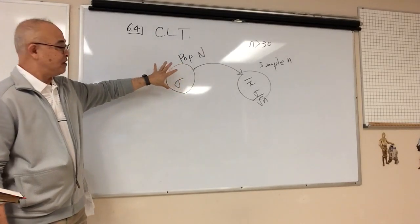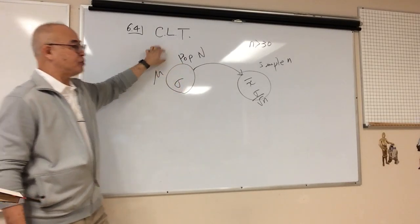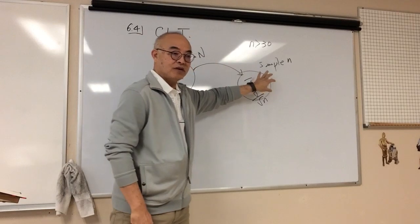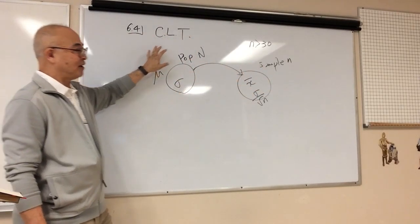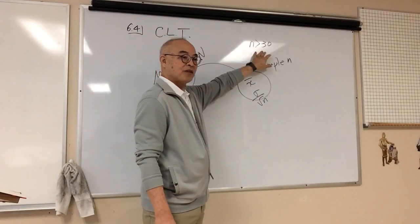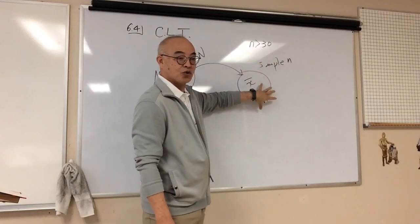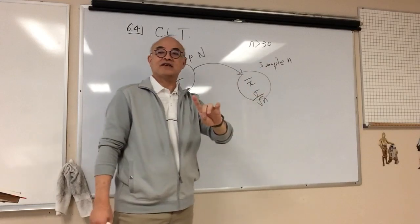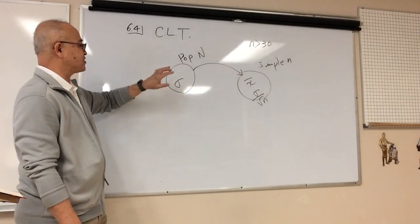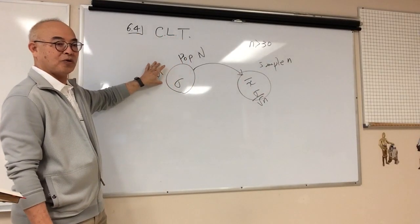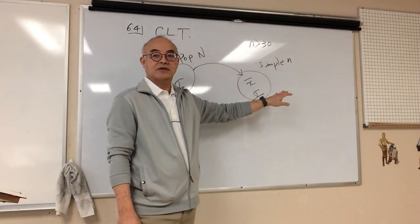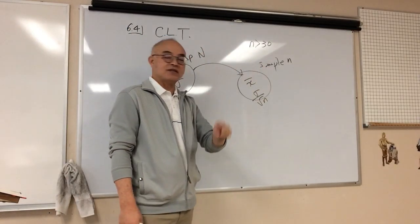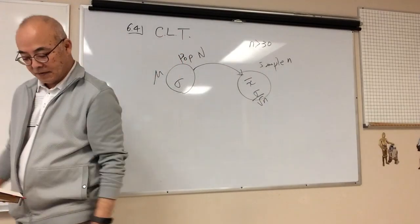So we're good if this is normal, right? If this is normal, we know this is normal. If it's not normal, and you take more than 30 samples, this is normal. What we did not discuss is what happens if this is not normal, and I take less than 30 samples. That's the only case that we haven't discussed yet.